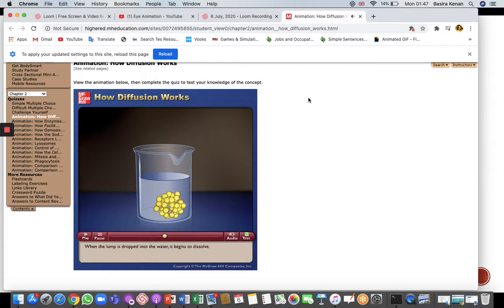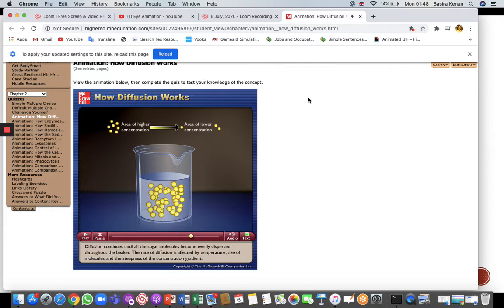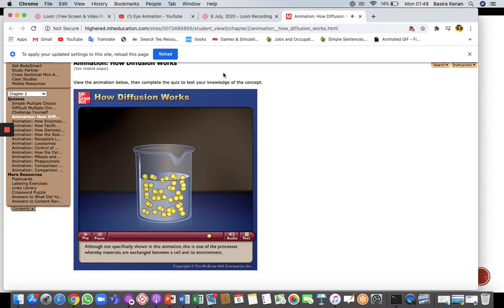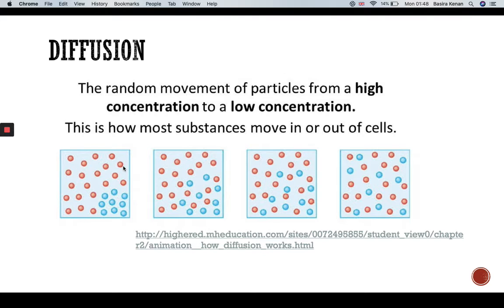Individual sugar molecules move randomly and constantly from the area where they are common to the area where they are scarce. This type of motion, when molecules move from areas of higher concentration to areas of lower concentration, is called diffusion. Diffusion continues until all the sugar molecules become evenly dispersed throughout the beaker. The rate of diffusion is affected by temperature, size of molecules, and the steepness of the concentration gradient. This is one of the processes whereby materials are exchanged between a cell and its environment.